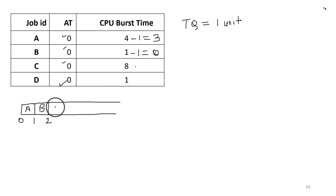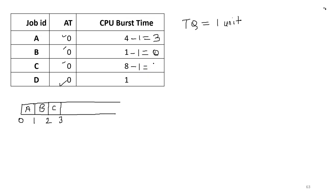After B, C will get the CPU for a time quantum of one unit; total time is three. The remaining time of C is eight minus one, that is seven. After C, D will get the CPU for a time quantum of one unit; total time is four. D's remaining time is one minus one, that is zero — D is also complete.